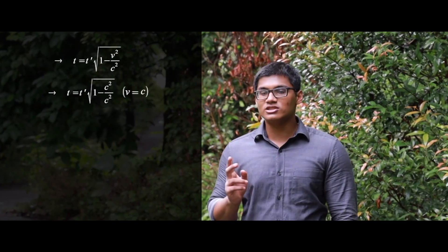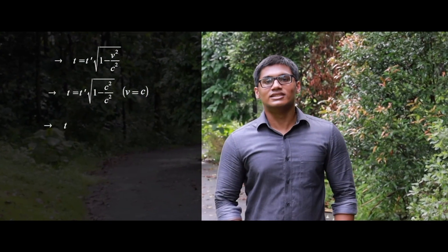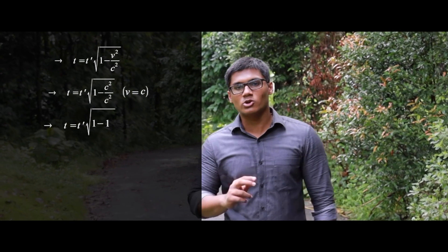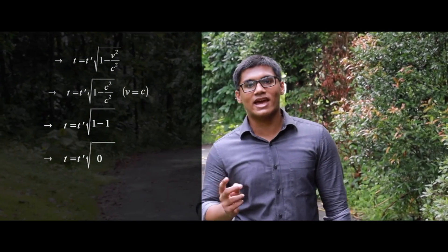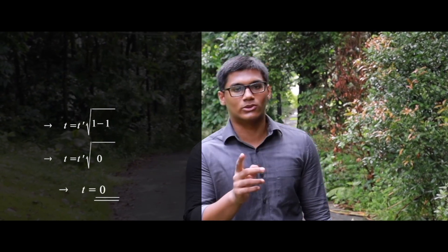With this equation, let's see what time is for a body moving with the speed of light. In our equation, V is the speed of the moving body. We are going to substitute V with c, since our body is moving with the speed of light. That gives t equals t prime into the square root of (1 minus c² / c²). Solving that, we get t equals 0. That is — time stops.